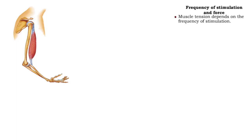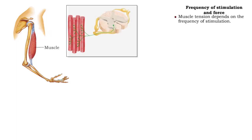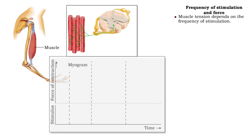The amount of tension generated from muscle contractions depends on the frequency of stimulation. A single stimulus produces a muscle twitch.